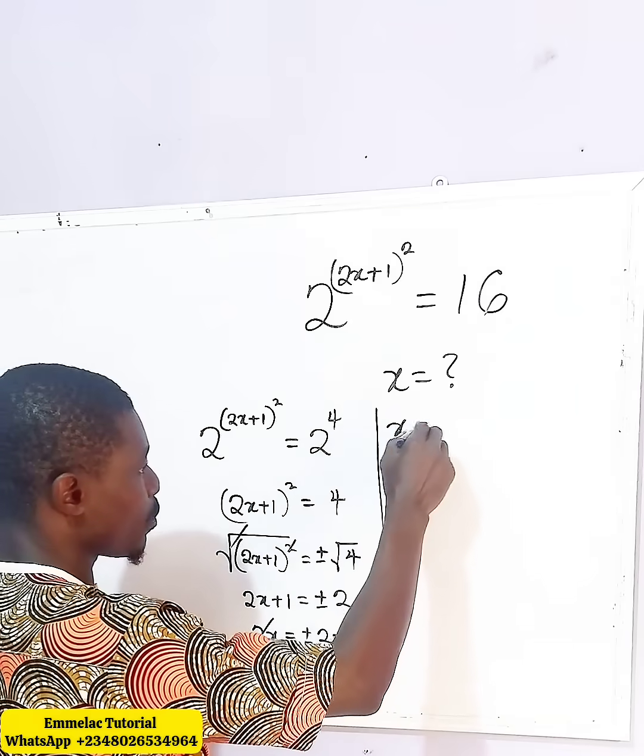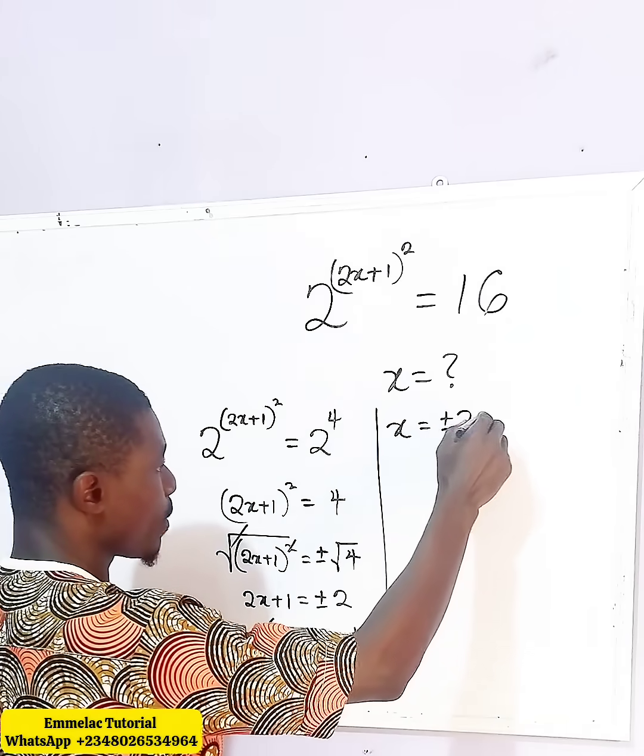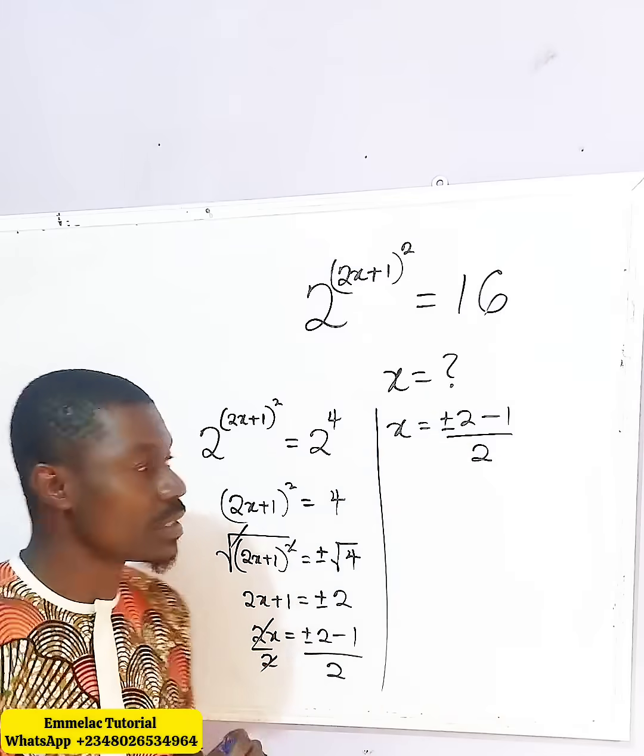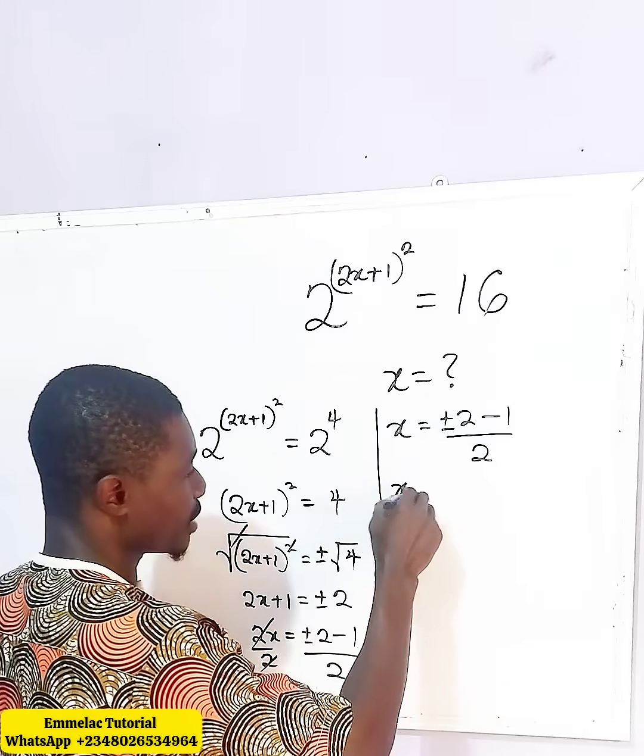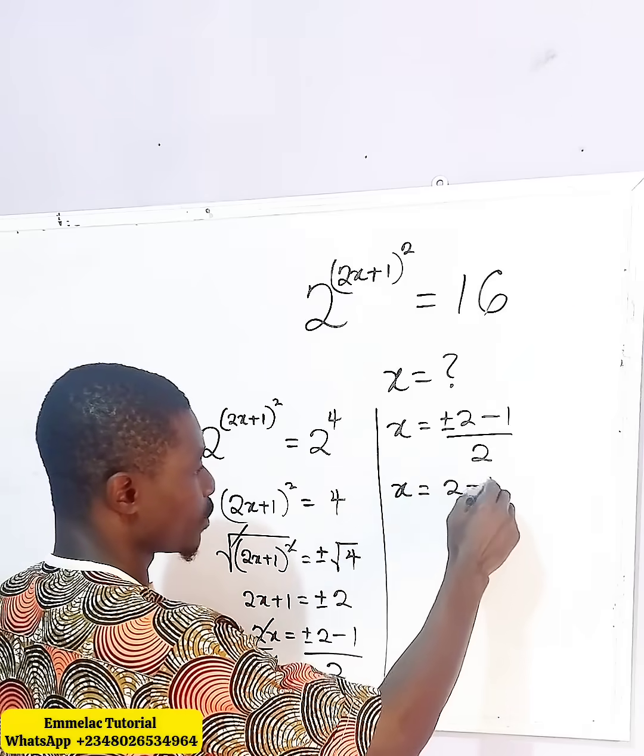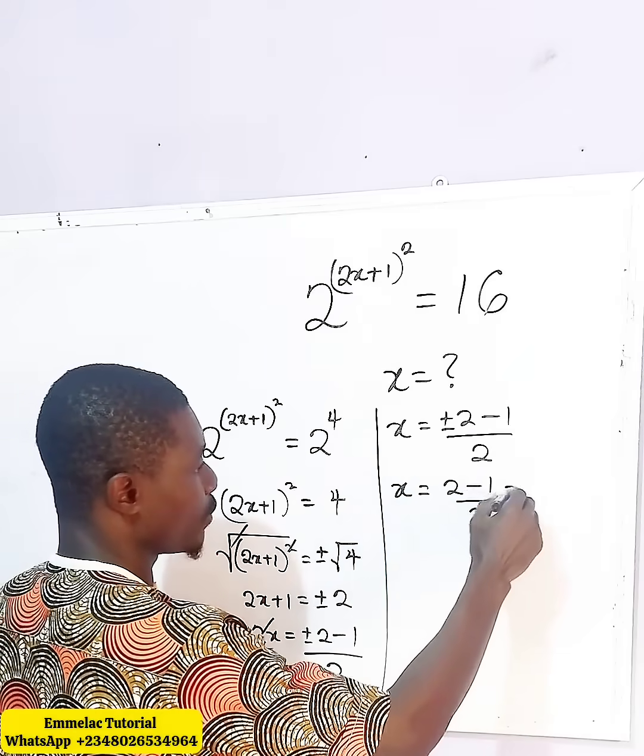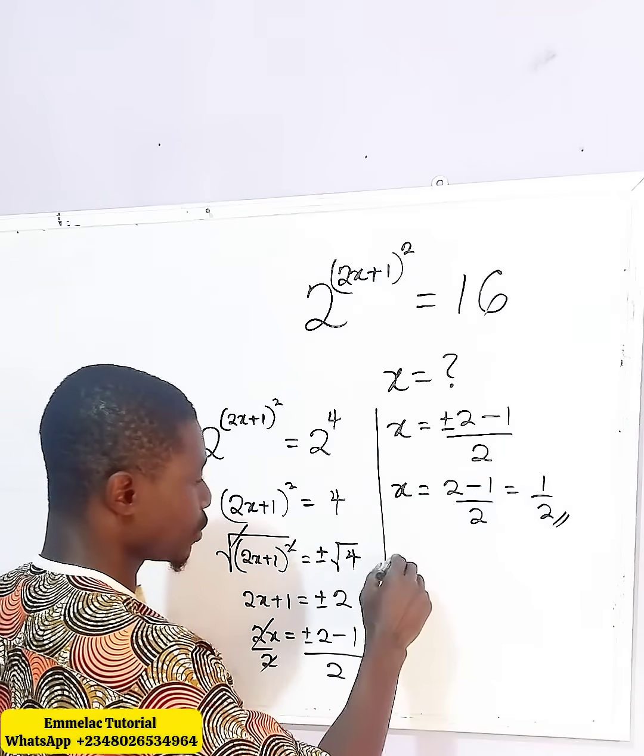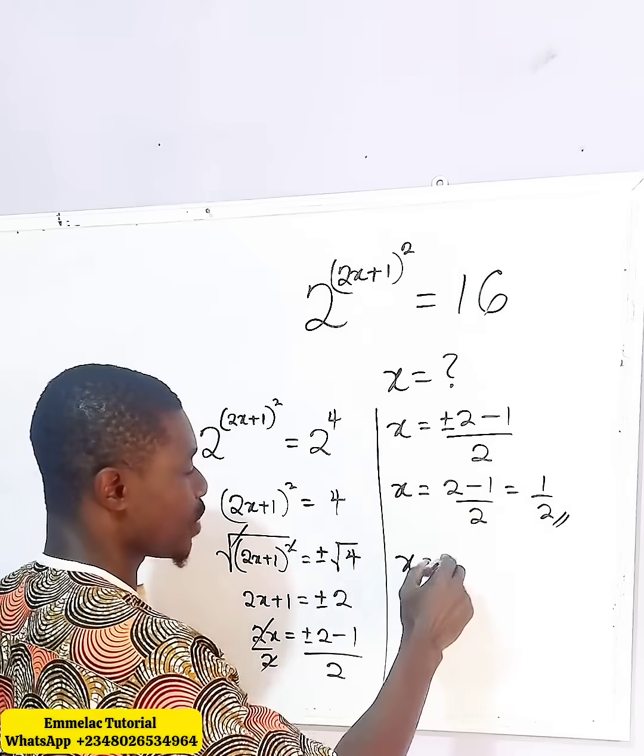We are now left with x equals (plus or minus 2 minus 1) all over 2. Now let's do this. Then x, taking the positive side first, we have 2 minus 1 all over 2, giving us 1 over 2, first solution.